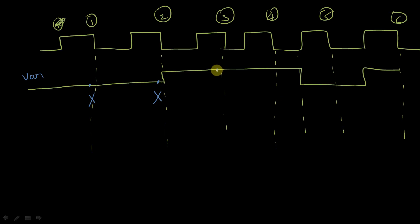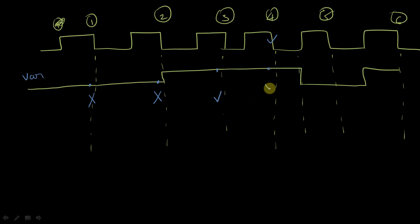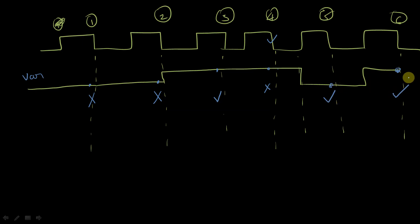At the third evaluation point, the value is equal to zero and at the previous evaluation point it was equal to one, so this particular point is going to pass. At the fourth evaluation point, the value is equal to one and the previous evaluation point the value was equal to zero, so here it is going to fail because there is no change. At the fifth evaluation point the value was equal to zero and at the fourth evaluation point the value was equal to one, so it is going to pass. At the sixth evaluation point the value was equal to one and at the fifth evaluation point the value was equal to zero, so it is going to pass. So this is how your $changed function is going to work.